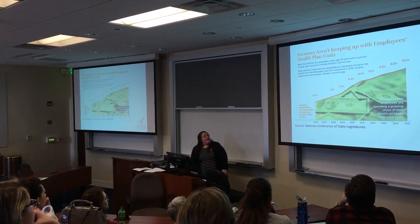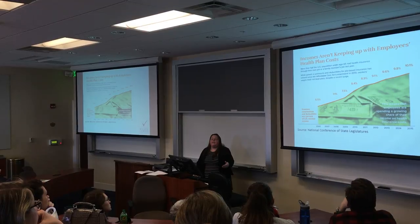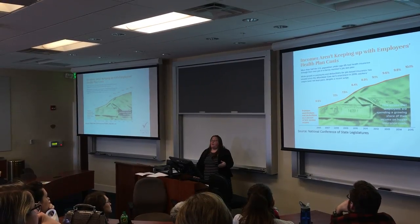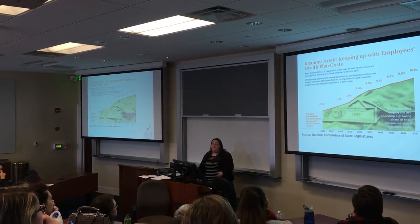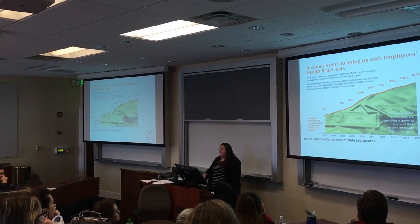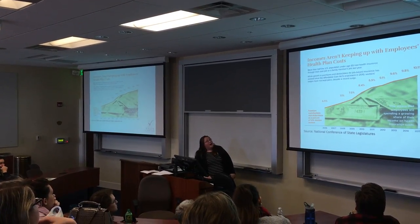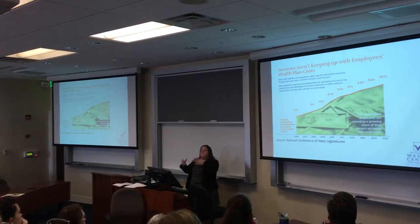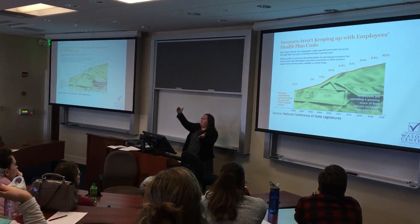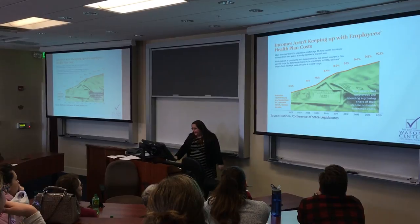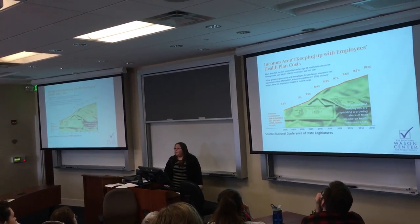Here's a graphic showing premium contributions for families as a percent of their median income — which in the U.S. is about $52,000, recently ticking up to around $54,000. You can see that as a chunk of income, health care costs have been rising and rising. And income during that same time period has been relatively flat.